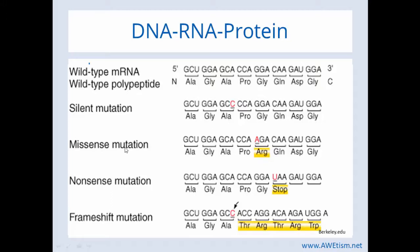A missense mutation — you can see here there's a mutation where in the original RNA it was a G, and now it's an A. So now you have a different amino acid in the protein. This is called a missense mutation.